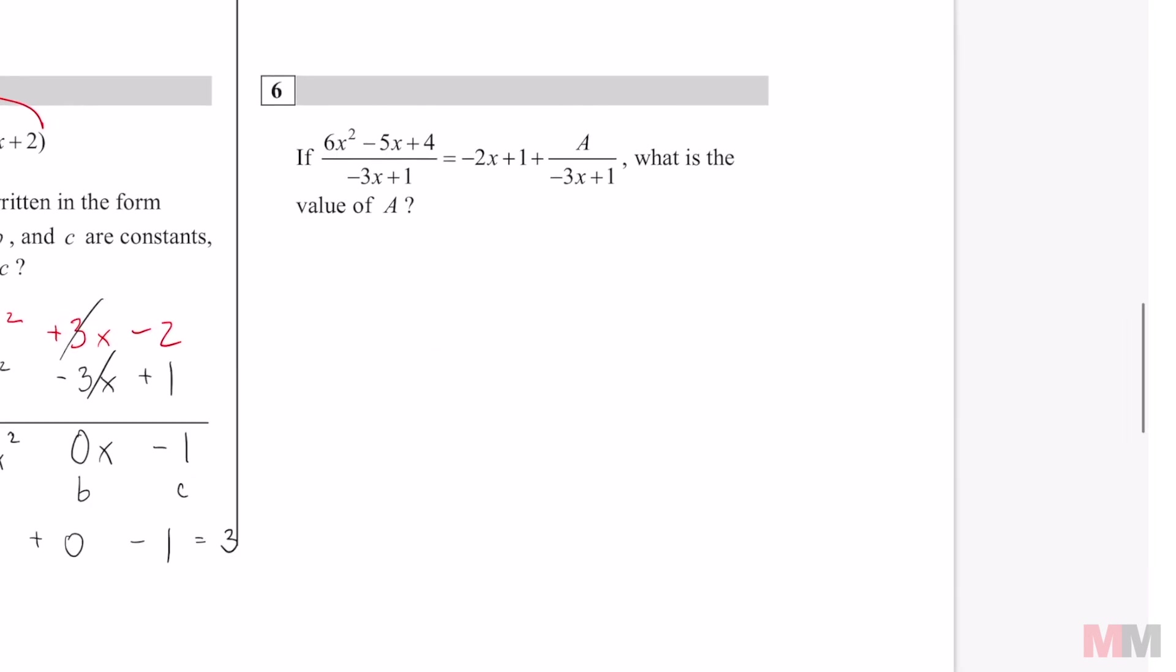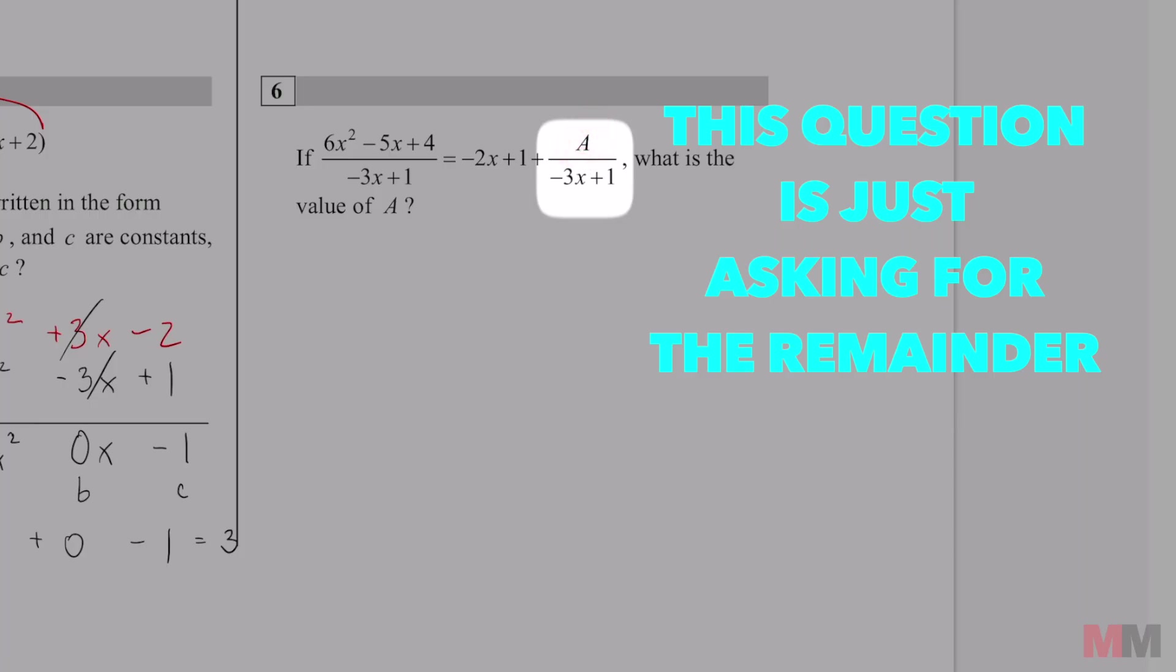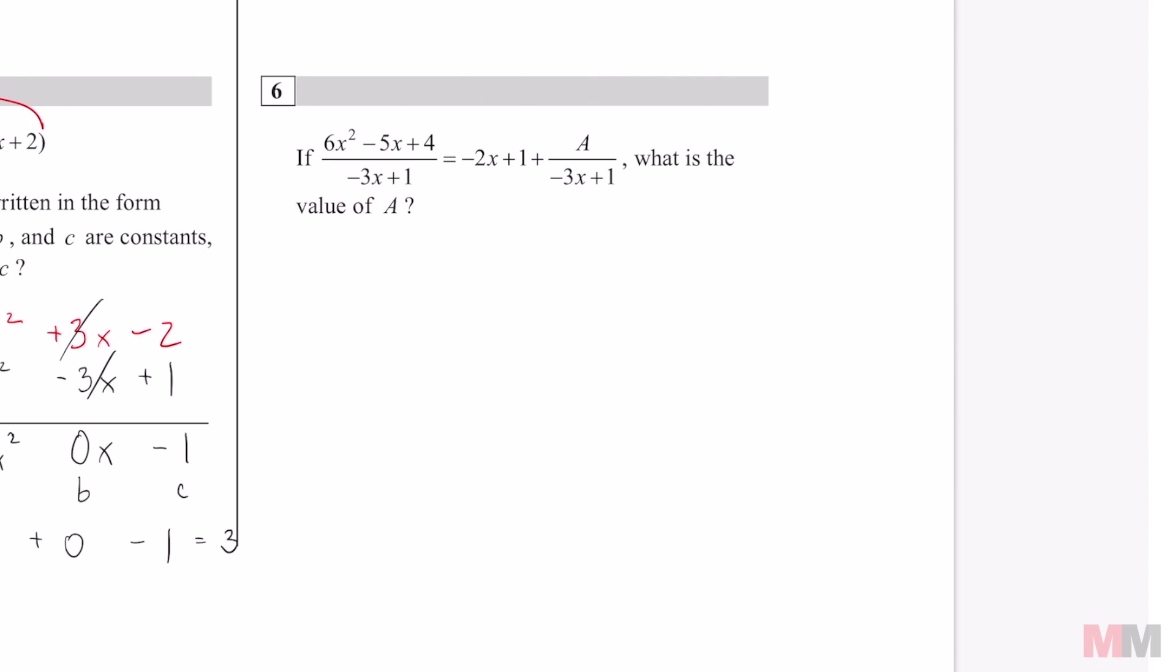For the last one you can either do it through long division or you can do it by synthetic division. My fan favorite synthetic division is what I really suggest especially when the question is like what is the remainder and that's pretty much what this is asking. This right here represents your remainder. As long as whatever I'm dividing by is a degree of 1 we can do synthetic division. To set that up just like number 4 first set this equal to 0 and that's the number that goes on the outside of the box. Minus 1 and negative 3x equals negative 1 divided by negative 3. One third is the number that goes on the outside of the box and this inside will just be the coefficients of this as long as it's in descending order and I'm not missing any terms.